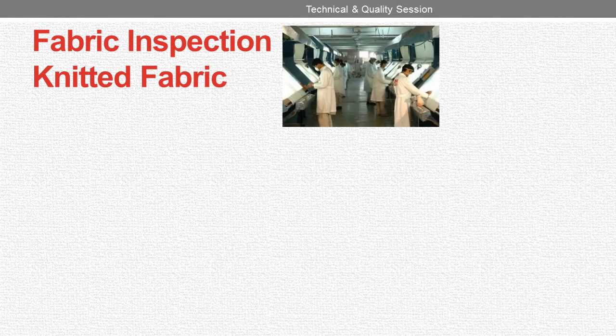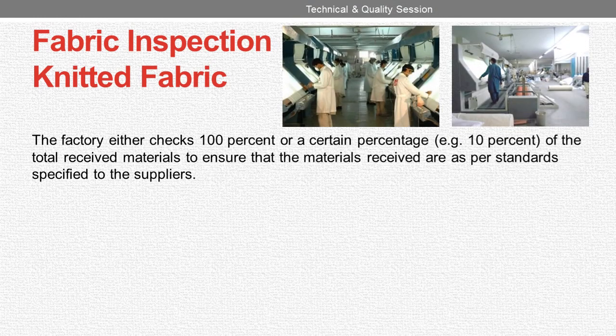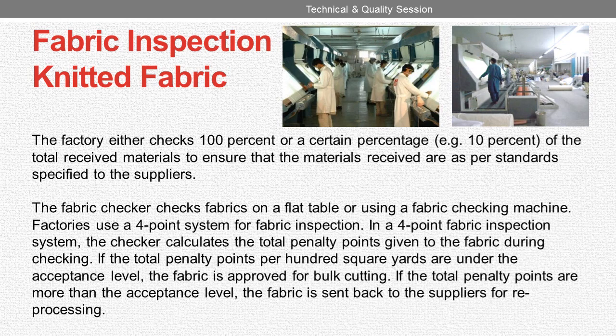Fabric inspection — knitted fabric. The factory either checks 100% or a certain percentage, for example 10%, of the total received materials to ensure that the materials received are as per the standards specified to the suppliers. The fabric checker checks fabric on a flat table or using a fabric checking machine.